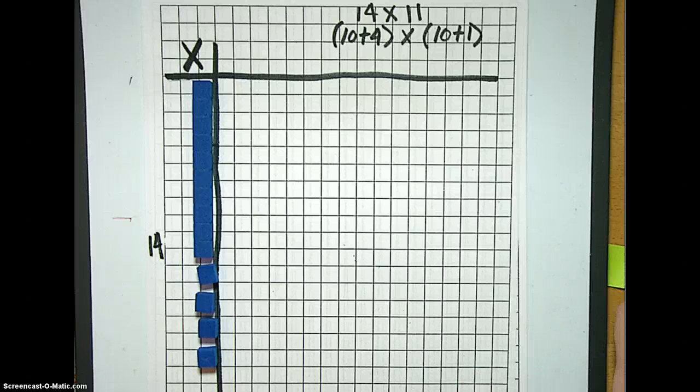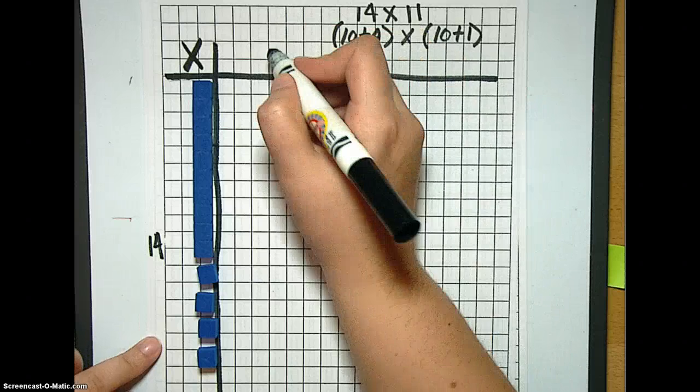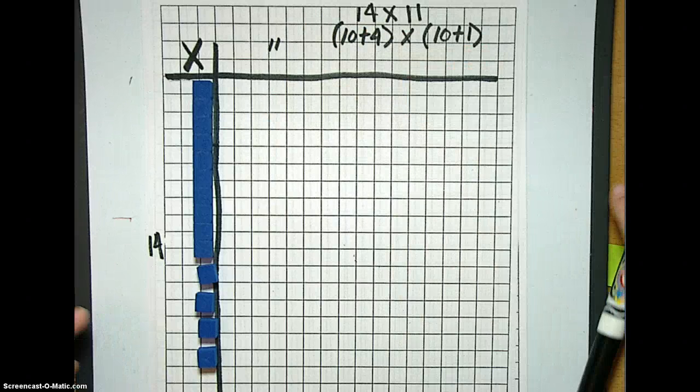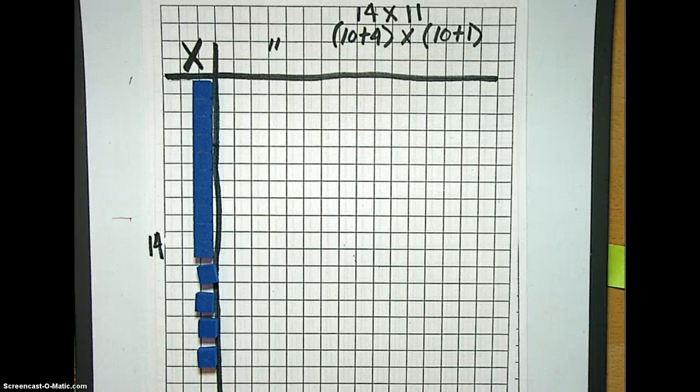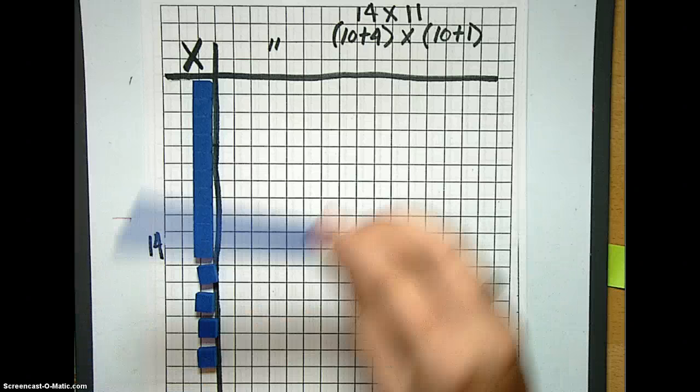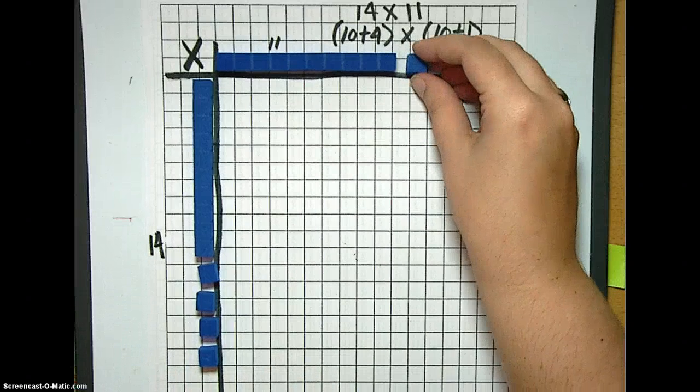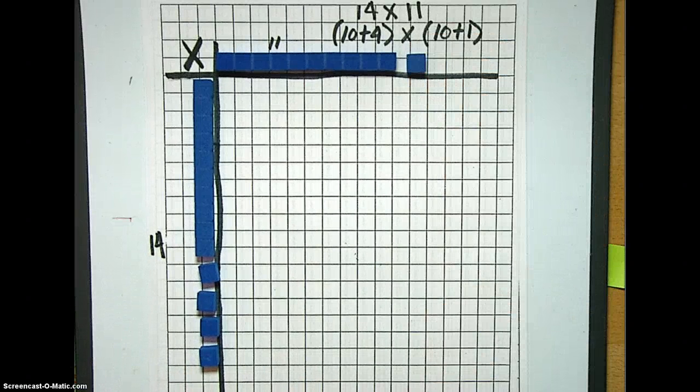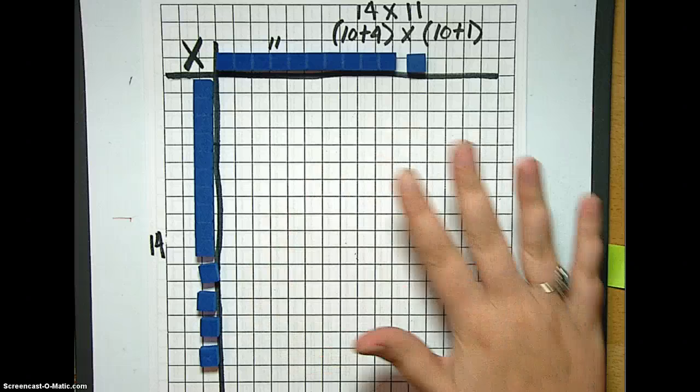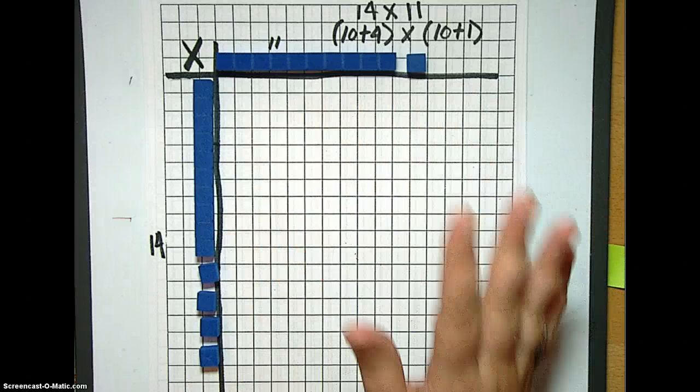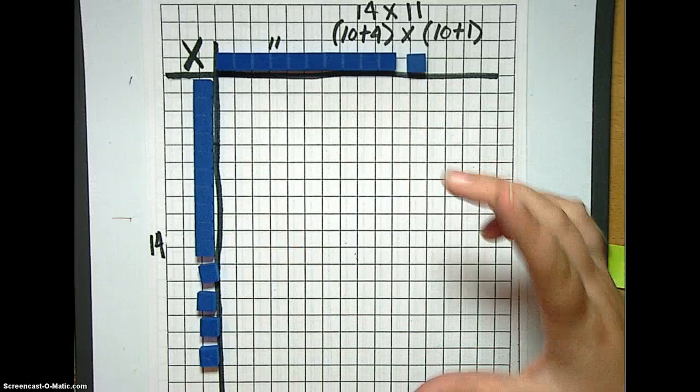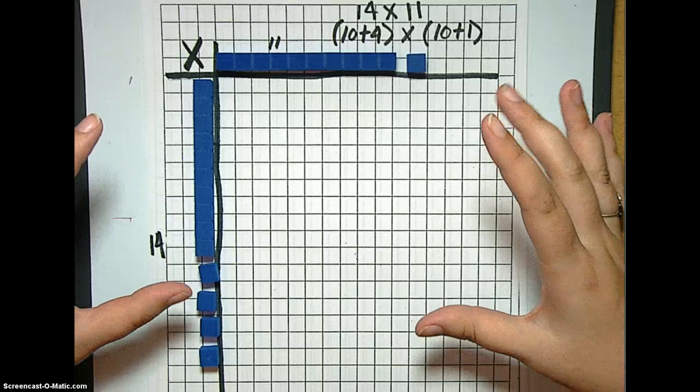What do we need next? 11. So my 11 is going to go over here. And as we've already established, that's actually 10 plus 1. So let's do a 10. Awesome. And a 1. So you might be wondering why I've left all this empty space here because it's really unclear. But we're just going to fill in that space, and that's going to have our answer.